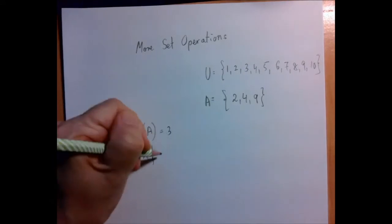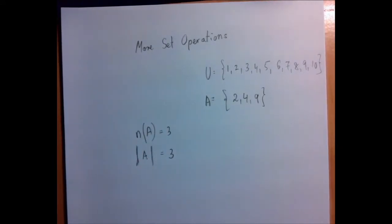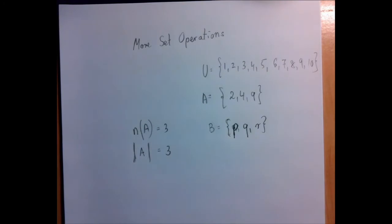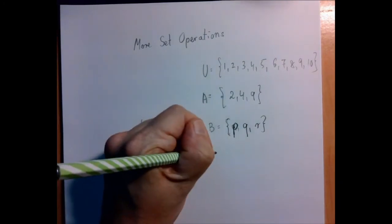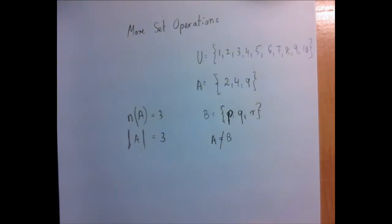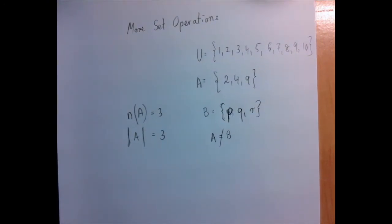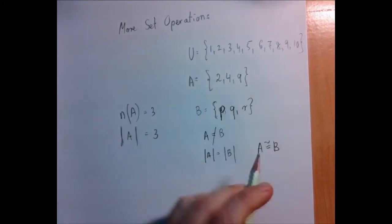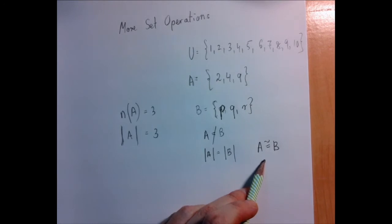In this particular case, the cardinality of A is 3. Now, two sets are equivalent if they have the same number of elements. So for example, if B is the set containing P, Q, R, then A and B are different sets, but they're equivalent. Equivalent means they have the same number of elements. And sometimes when you see this — I'm not going to use it in this class — this symbol means equivalent, not equal, just equivalent.